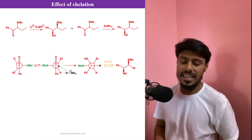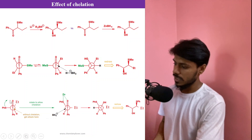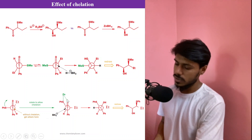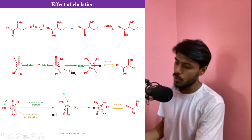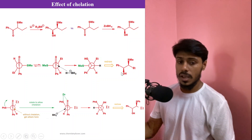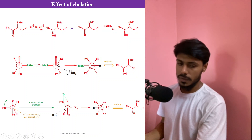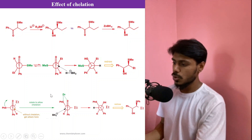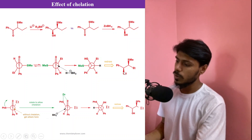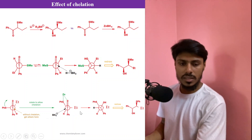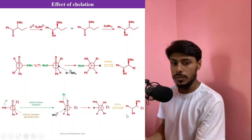With zinc(II), chelation forms between the sulfur and the oxygen group, dragging the PhS group toward the oxygen and making them eclipsed, while the ethyl group goes perpendicular to the oxygen. This is the chelation effect. Now borohydride attacks from the less-hindered side, but in this chelated conformation it attacks from the left — opposite to the non-chelated case — giving a different product. Chelation cannot occur with lithium, so lithium follows the simple Felkin-Anh model.